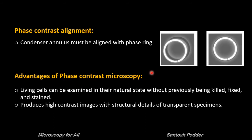Always check the phase contrast alignment before you start. The dark ring of the phase plate must be perfectly aligned with the bright ring of light from the condenser annulus, and the adjustment can be made using two condenser centering screws. Using phase contrast microscopy, living cells can be examined in their natural state without killing or fixing, and it can provide high contrast images with structural details of transparent specimens.